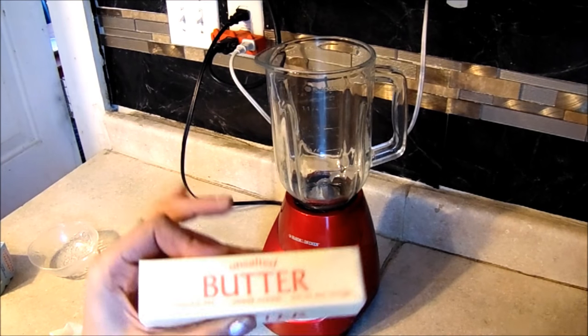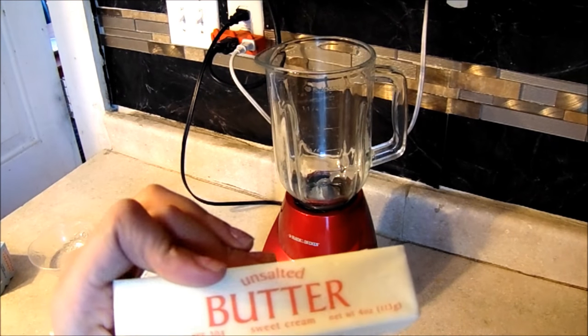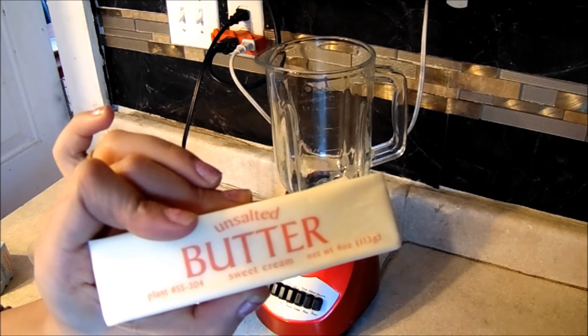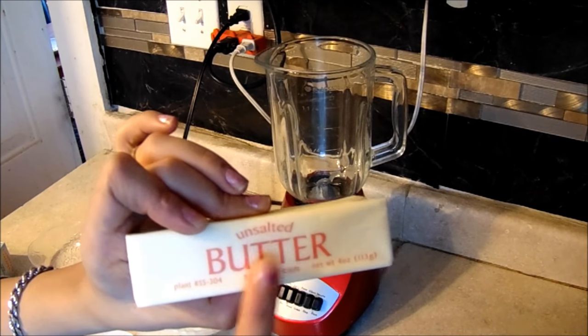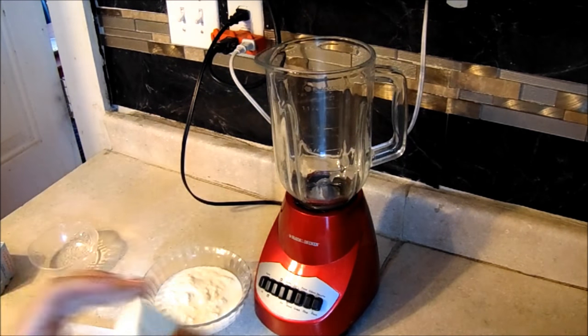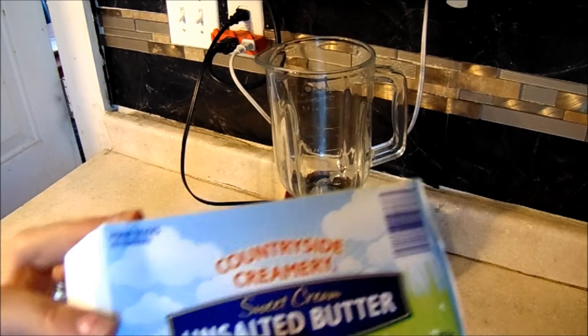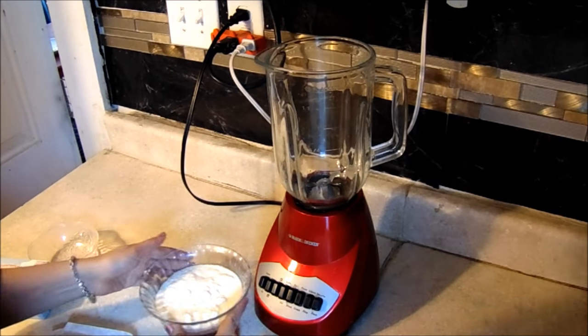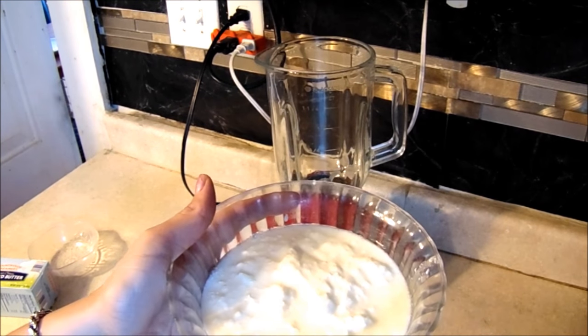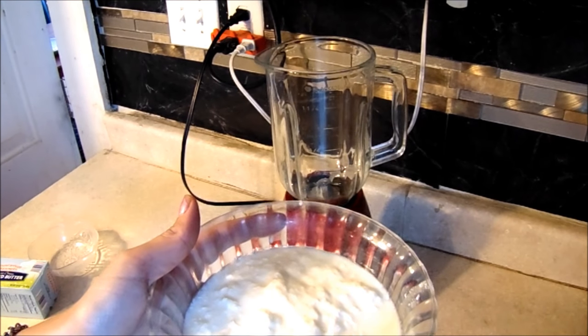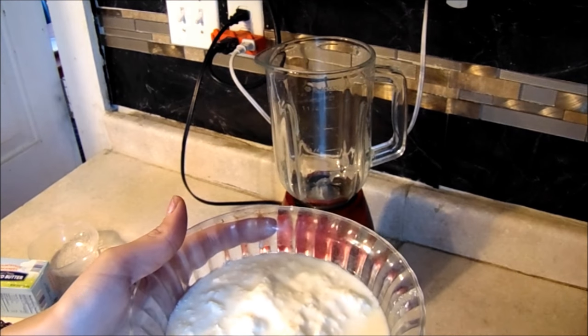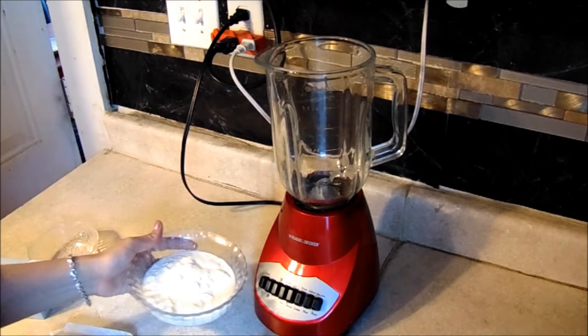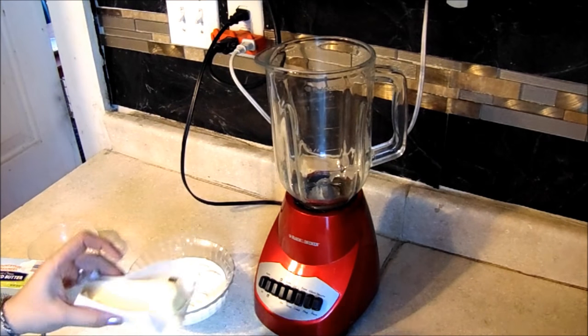To make this butter, I'm using some unsalted butter - this is the sweet cream, but you don't have to use sweet cream as long as you get the unsalted butter version. Here I have some of my homemade yogurt, or you can use traditional plain yogurt from the store. I'm doing two cups of yogurt and two sticks of butter.